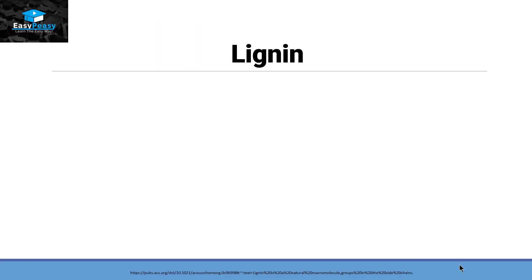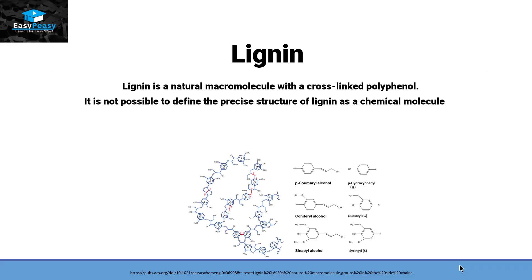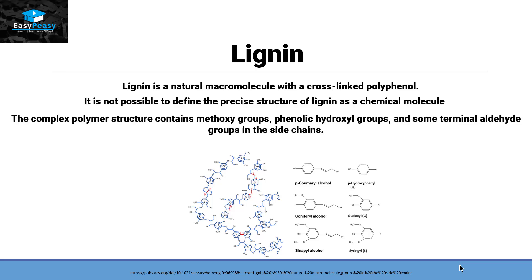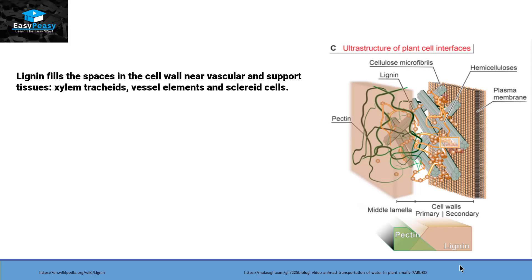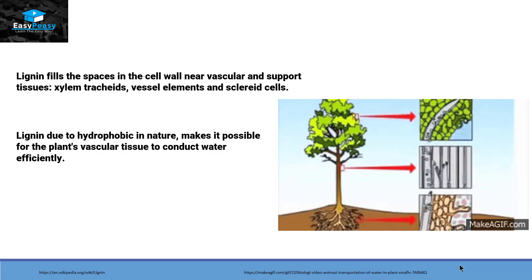Lignin is a natural macromolecule with a cross-linked polyphenol structure. It is a heteropolysaccharide with a variety of monosaccharides, and this complex polymer mostly contains methoxy groups, phenolic hydroxyl groups and terminal aldehyde groups in the side chain. Lignin fills the spaces in the cell wall near vascular support tissue like xylem, and as it is hydrophobic, it allows water to be conducted through xylem vessels more efficiently.